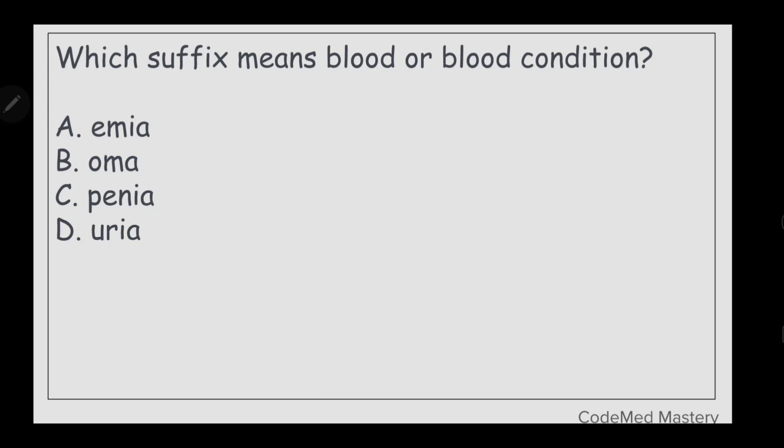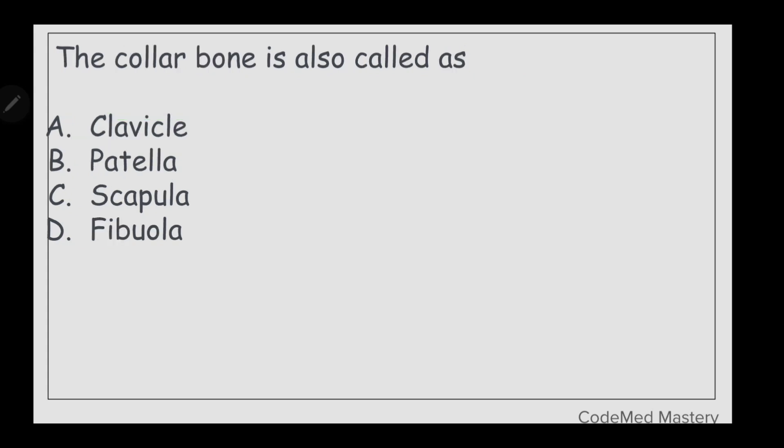Next question: which suffix means blood or blood condition? Option A: -emia, option B: -oma, option C: -penia, option D: -urea. The right answer is option A, -emia.